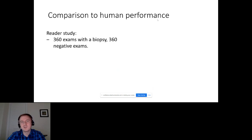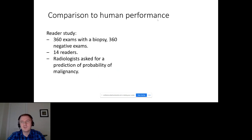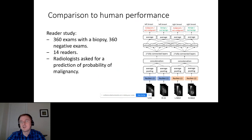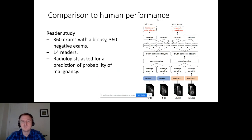We compared it to human performance in a reader study. We took 720 exams — half of them with a biopsy positive and half of them negative — and checked how radiologists would do on this subset of the data. We asked 14 of them to read those exams and provide a prediction of probability of malignancy. In this case, we only look at malignant changes, because it's just how radiologists are trained, and it makes for a better experiment to compare the two.